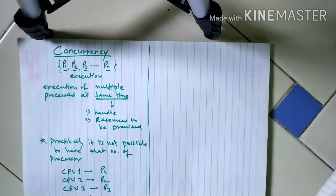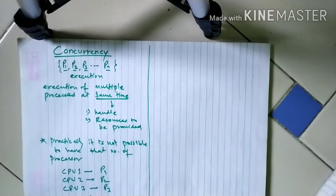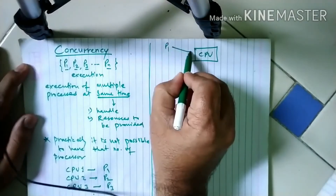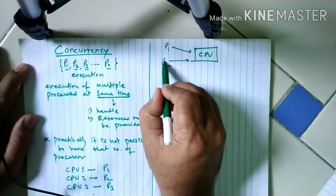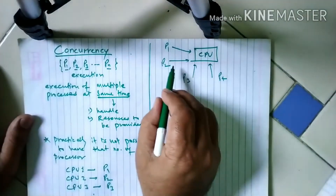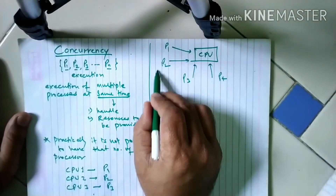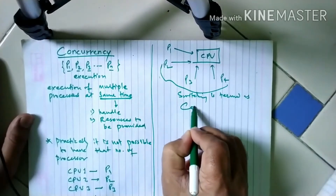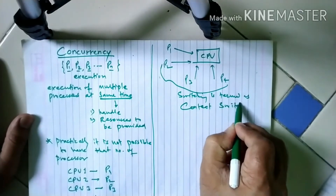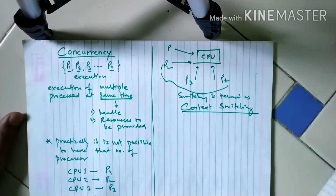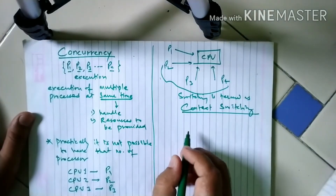Using the principle of concurrency, the processes which are coming for execution will switch, because we have only one processor, only one CPU. Process P1 comes first and executes, then process P2 will come, then P3, then P4, and so on. The switching between all these processes is termed as context switching.